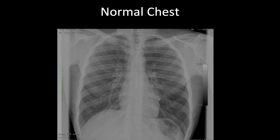The cardiothoracic ratio is the widest diameter of the heart divided by the widest diameter of the thoracic cavity — measured from inner chest wall to inner chest wall. If it's over 50%, the heart is enlarged. This ratio is a linear equation and is only reliable if the magnification of the image is constant.